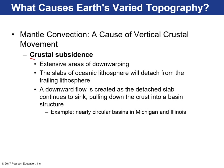We can also have crustal subsidence as a result of mantle convection — areas where there's downwarping or formation of basins. This can happen if an ocean slab detaches from the trailing lithosphere. As it descends, in its wake, it creates a downward flow, causing everything to sink behind it and pulling the crust into a basin structure. That's true of the circular basins found on the Michigan Peninsula and Illinois — we think there was a subducting portion of ocean lithosphere trailing down and pulling mantle material behind it, causing this downwarping. Mantle convection plays a big role in Earth's varied topography.